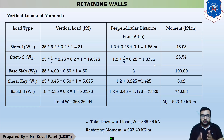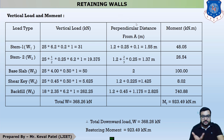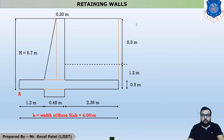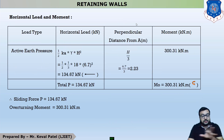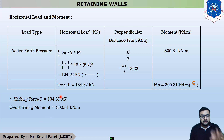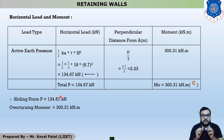Hello everyone, this is the fourth lecture of our example number one, which is the design of cantilever retaining wall. In the last lecture, we discussed step number three, which is stability calculation. In the stability check, we calculated the horizontal force and moment due to horizontal force. This force is called the sliding force, which is 134.67 kN, and the moment generated due to horizontal force is called the overturning moment, with a value of 300.31 kN·m.